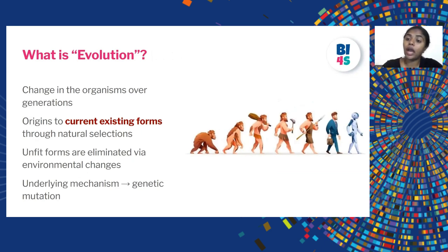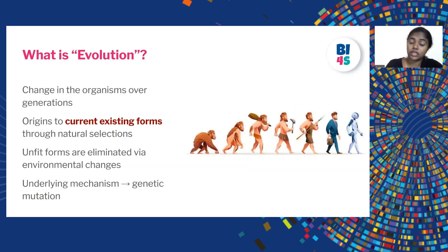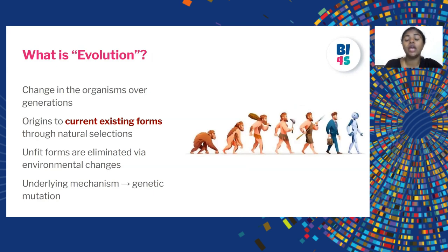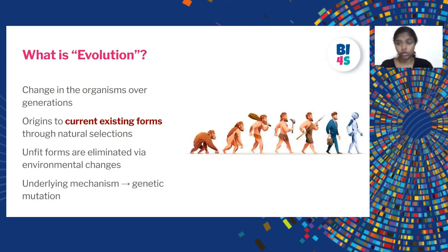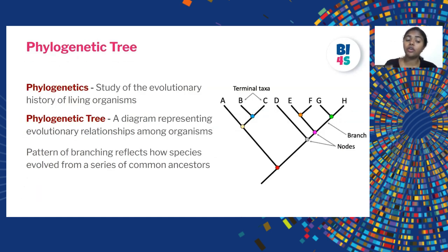The advantage of building a phylogenetic tree is to study evolution. If you have three or four organisms and want to see how similar they are, you go for phylogenetic tree construction. Evolution, in simple terms, is the change in an organism over generations. Through natural selection, it gives rise to our current existing forms, and unfit forms are eliminated by environmental changes. The underlying mechanism is genetic changes and mutations. Phylogenetics is the study of evolutionary history of living organisms, and a phylogenetic tree is a diagrammatic representation of evolutionary relationships among organisms, where the patterns of branching reflect how species evolved from a series of common ancestors.